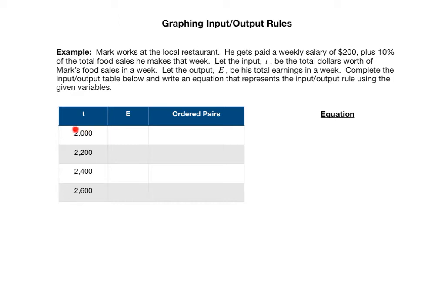If he sold $2,000 worth of food, he gets $200 no matter what. That's his weekly salary. Plus, he gets 10% of however much he sold. So add on 10%, which is 0.10 times the $2,000. 10% of $2,000 is $200. $200 plus $200 is $400. So if he sold $2,000 worth of food, he'd make $400 that week.